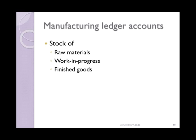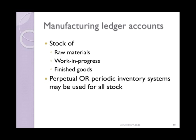Usually a separate cost account section might be used to classify the different types of costs used by a business, to which the expenses are all closed off. Alternatively, the costs may simply be recorded in the statement of income section. A business might use the perpetual or the periodic inventory systems for all their stock depending on the characteristics and requirements of the business.